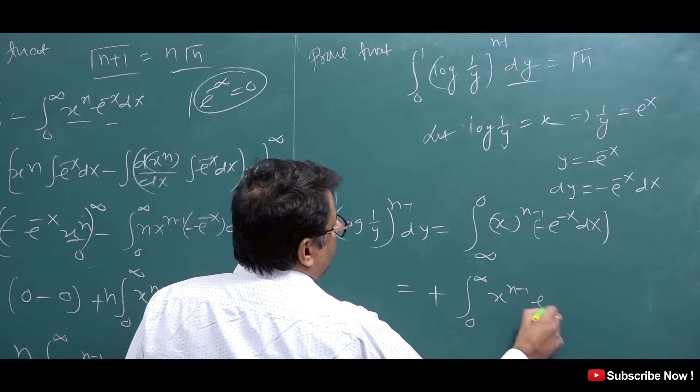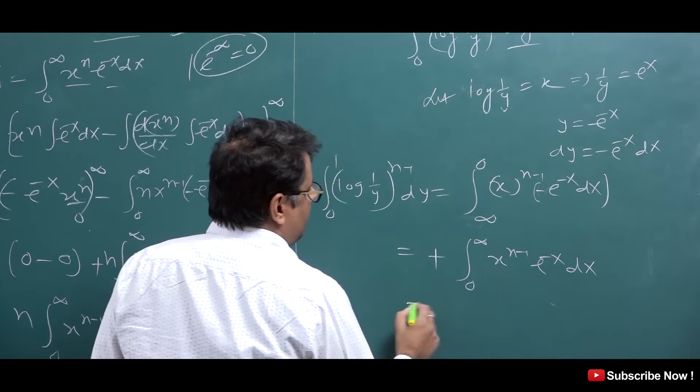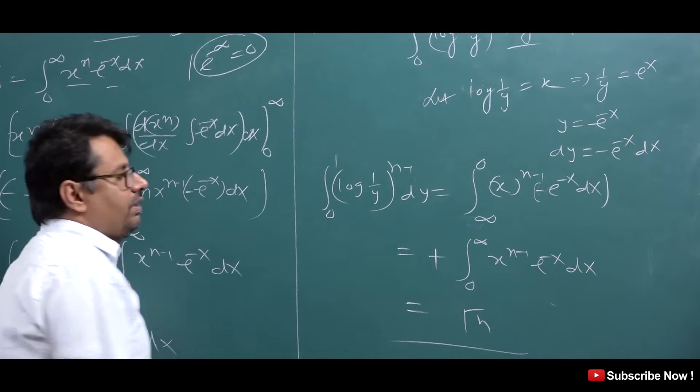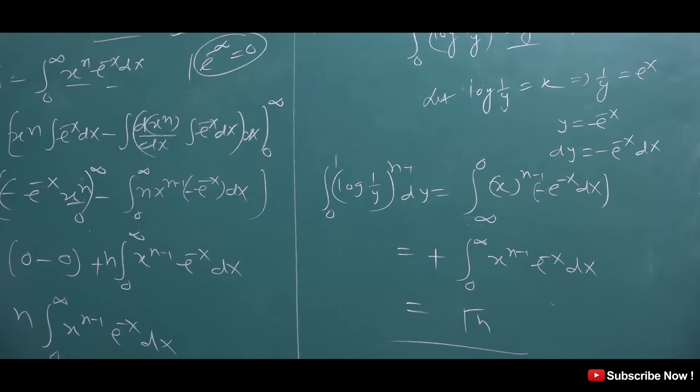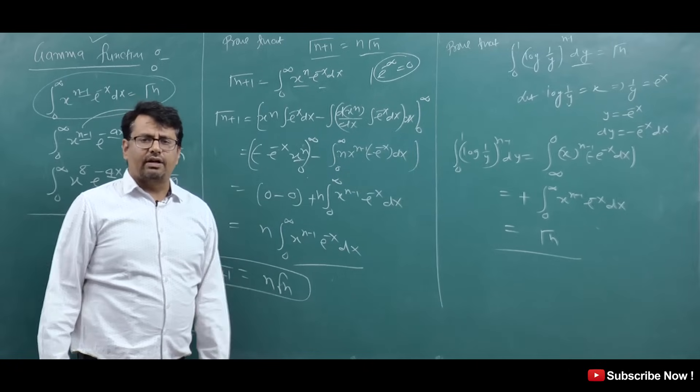After substitution and limit change: ∫₀^∞ x^(n-1) e^(−x) dx, and this value equals Gamma(n). So this question is proved.